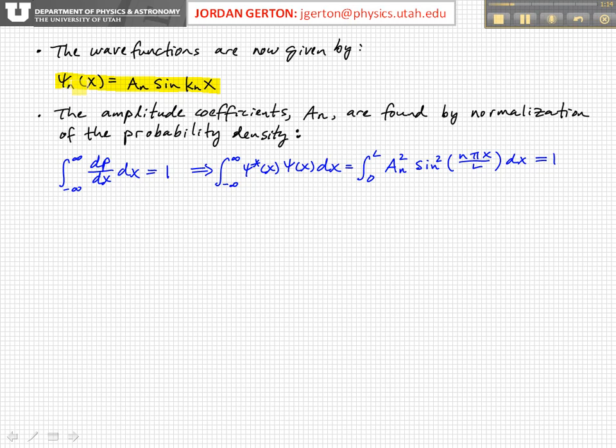And I've indicated, I've reminded ourselves that we have a quantized system by putting the quantum number n as a subscript. And so basically you'd have psi 1, psi 2, psi 3, etc.